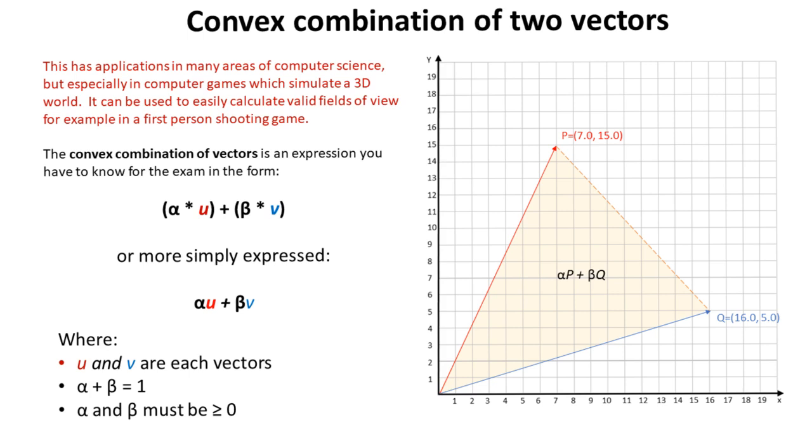The convex combination of vectors is an expression you have to know for the exam, and it's in the form alpha times u plus beta times v, or more simply expressed as αu + βv, where u and v are each vectors. Alpha plus beta must equal 1, and at the same time, both values must be greater than or equal to 0.